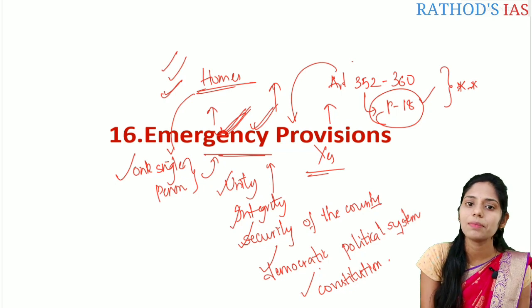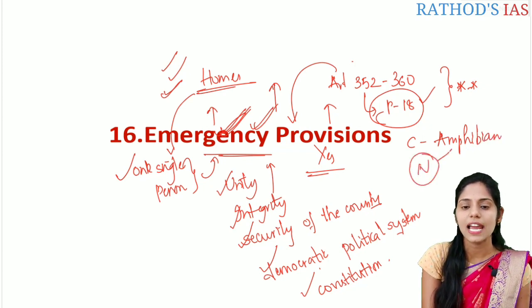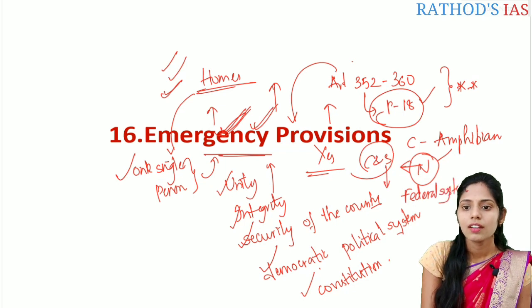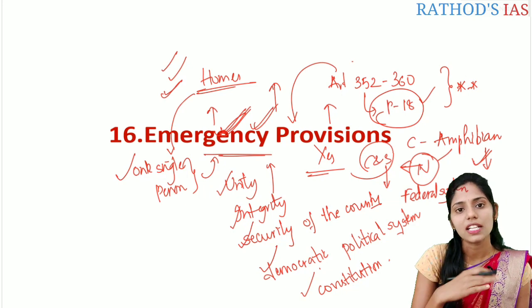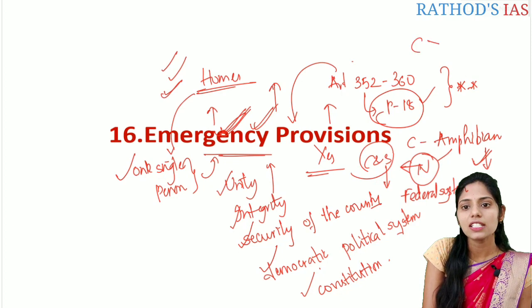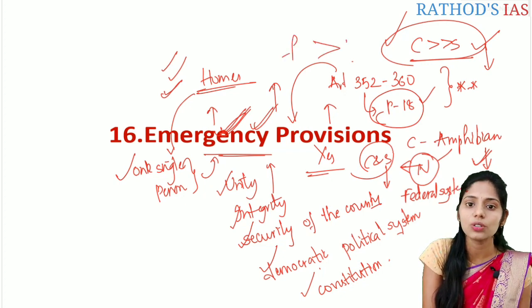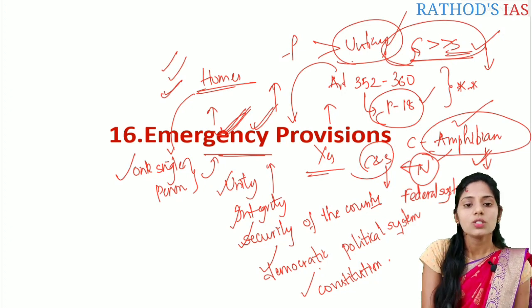Our constitution is amphibian in nature. In normal circumstances there is a proper distribution of powers between the center and the state — this is called the federal system. Whenever emergency provisions are imposed, the division of powers between the center and the state disappears, and the center becomes more powerful. The federal system of government turns into a unitary system. Because of this our constitution is called an amphibian type of constitution.